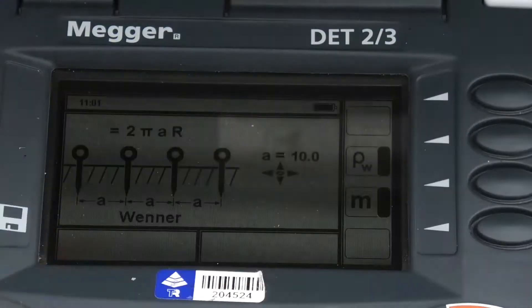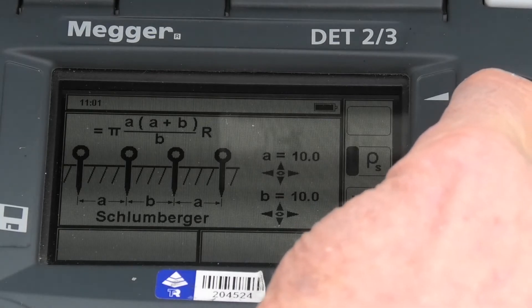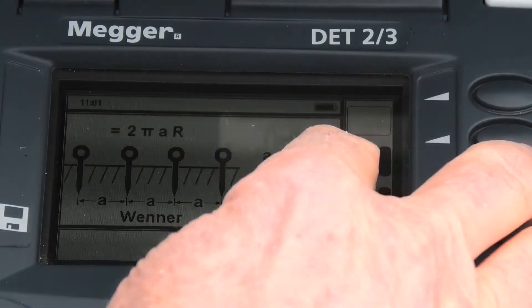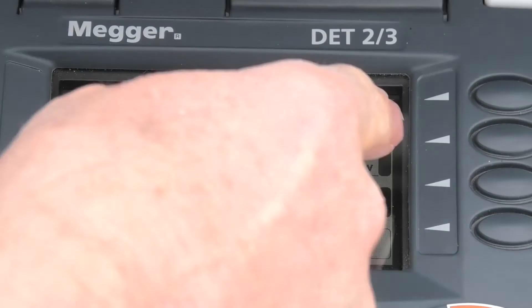We can switch between the Wenner or the Schlumberger method here. At the moment we're set to Wenner. We can also switch it to metres or feet if you need to. Now you can see the display.